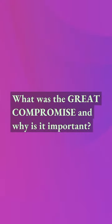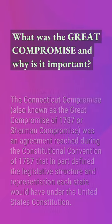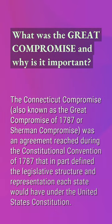What was the Great Compromise and why is it important? The Connecticut Compromise, also known as the Great Compromise of 1787 or Sherman Compromise, was an agreement reached during the Constitutional Convention of 1787 that in part defined the legislative structure and representation each state would have under the United States Constitution.